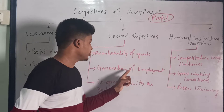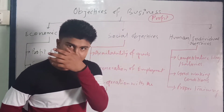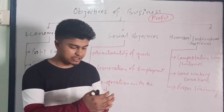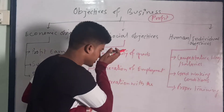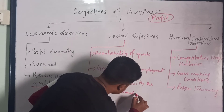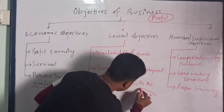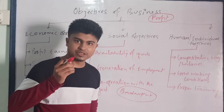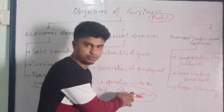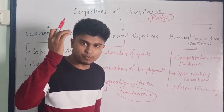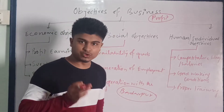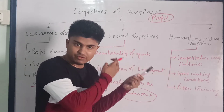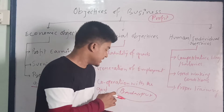Next under social objectives is generation of employment. Business should generate employment in the particular area where it is established. For example, if a business is established in Badarpur, it should create sufficient opportunities and provide employment for the people of Badarpur, so that they can join the organization, work for it, and earn their livelihood.